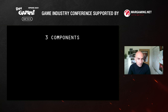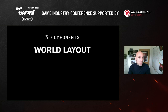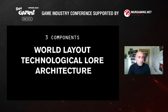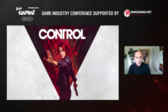Today I'm going to cover three components I use in world design: the world layout, including the history and background of the world; the technological lore — and I'll explain why I think that's an important part of world design; and finally, since Control is famous for its brutalist architecture, I can't do a talk without covering the architecture.